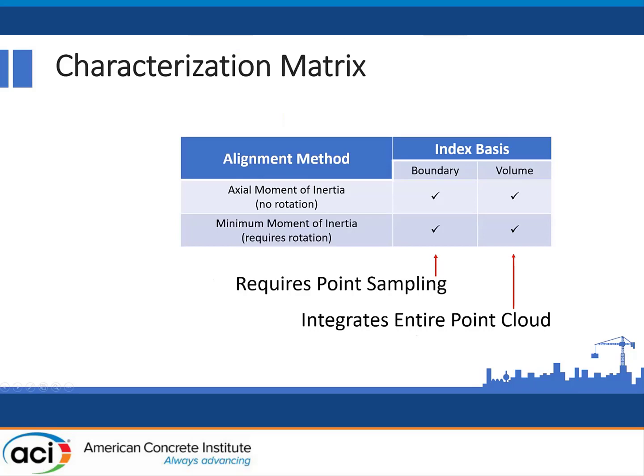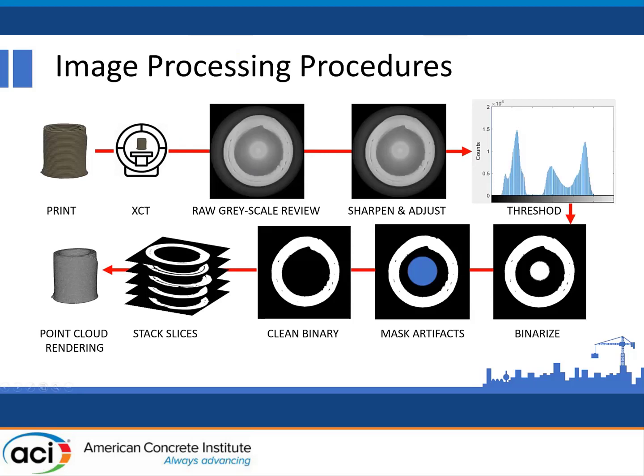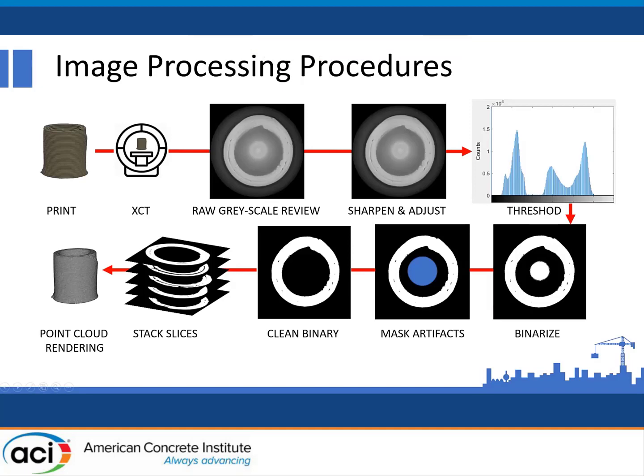We're doing the same image processing that everybody else does. We've printed our object, done a CT scan, and look at the raw grayscale images. We may sharpen or adjust them, then threshold and binarize. We remove any artifacts caused by the XCT — like a bright spot in the middle that's not part of the actual structure. We then have a clean binary image, which we stack and generate our point cloud rendering from which we can do calculations and quantitative analysis.